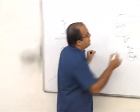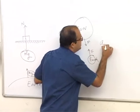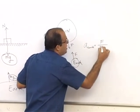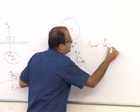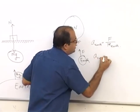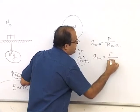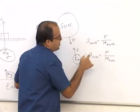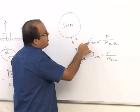The acceleration of the earth will be this direction force by the mass of the earth. The acceleration of the sun will be this force by the mass of the sun. This is much bigger compared to this. So the acceleration is much less compared to this acceleration.